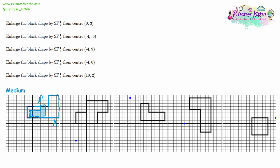So moving on to question two — same method. Let's choose the bottom left corner, the closest one, and look at the distance: it's a distance of six. Scale factor half, so half of six is three. So the new corner is going to be a distance of three away, halfway along that line. Let's choose another — the bottom right: that's eight to the right and six up. Scale factor half — we're not going to go eight to the right, we go four to the right; we won't go six up, we go three up.